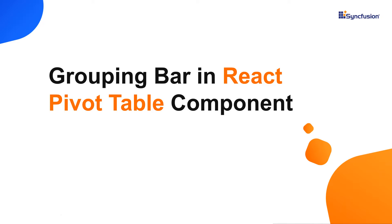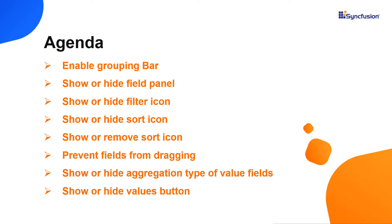Hi everyone, welcome back. In this video tutorial, I will show you how to enable a grouping bar in React Pivot table of Syncfusion. I will show you how to drag and drop fields between column, row, value and filter axes. I will also explain how to show or hide sort, filter and remove icons, value type drop down and value buttons in the grouping bar.